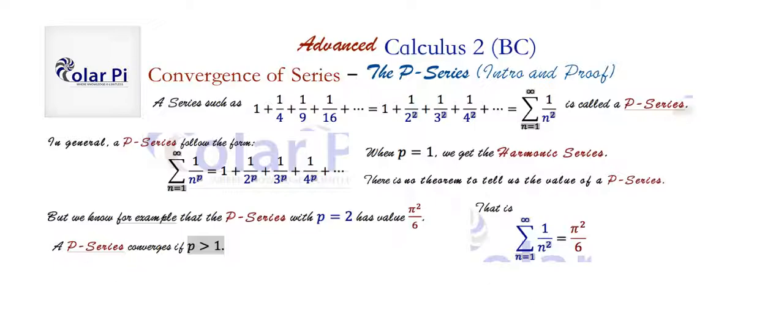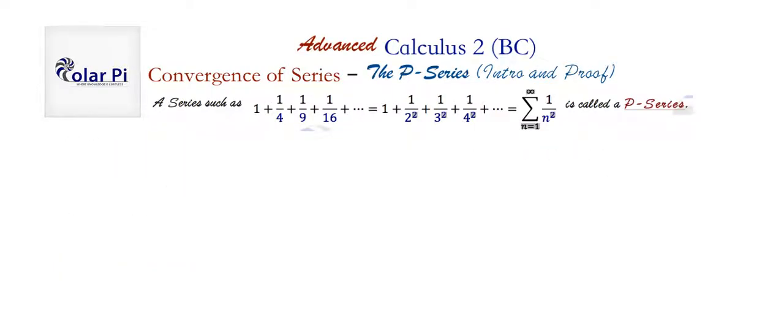even if we're not able to find the value of this sum, we know that the sum, the infinite sum, is convergent. That is, it goes to a finite number. The question is, why? Why is it that when P is greater than 1, a P series will converge? Well, let's make some space and find out why.